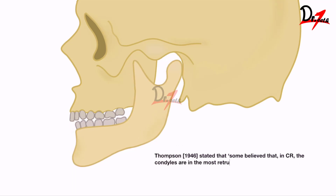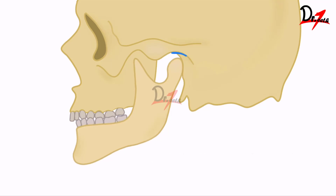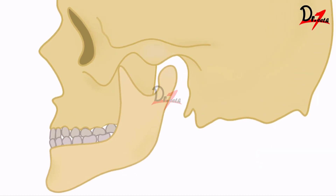Thompson in 1946 stated that some believed that in centric relation the condyles are in the most retruded position of the fossa, while others said that it is not. Then Granger in 1952 said that it is the uppermost rearmost position. Boucher in 1953 said that it is the most posterior relation. Then Stuart in 1955 gave the RUM position — rearmost, uppermost, and midmost position — which was quite popular for some time.